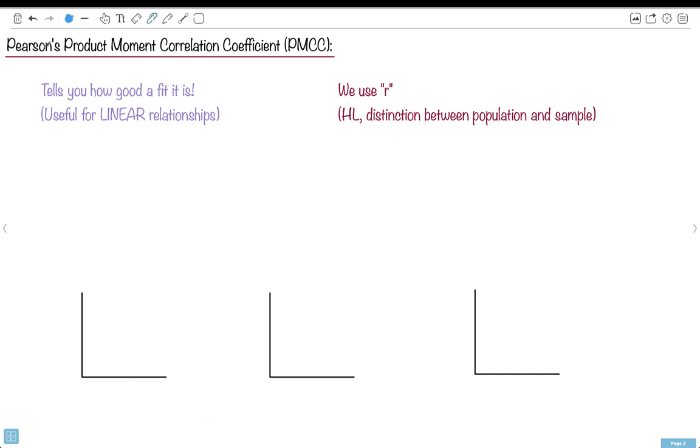Let's talk about something called Pearson's Product Moment Correlation Coefficient, which is sometimes called PMCC. Some people just call it R, but you've got to watch out, because depending on which class you're in, we have to specify what R is. In HL, we have a distinction between the population and the sample, but in this case here, we're just going to keep things nice and simple. We're just going to call it R, R for the Pearson's Correlation Coefficient.